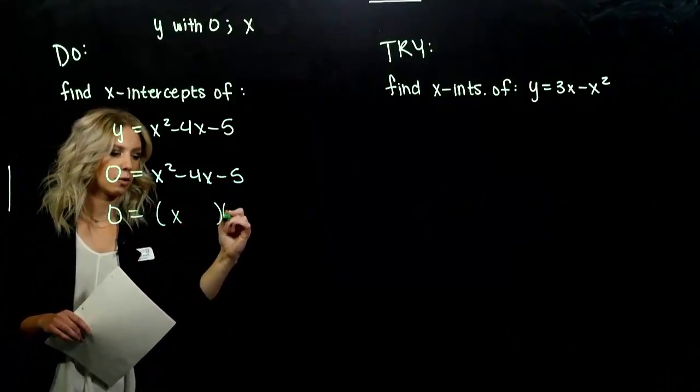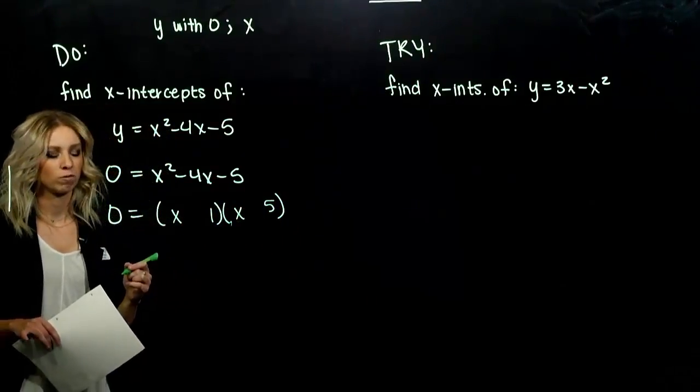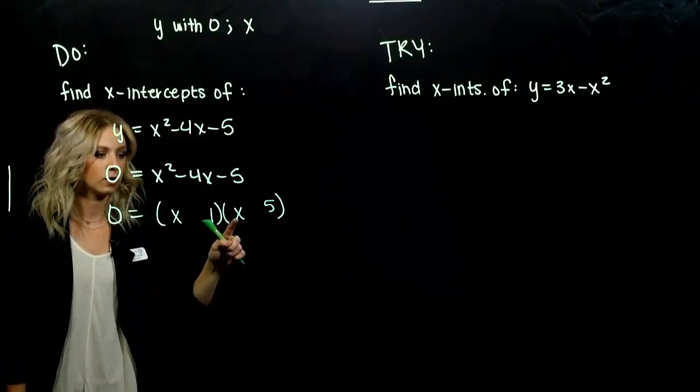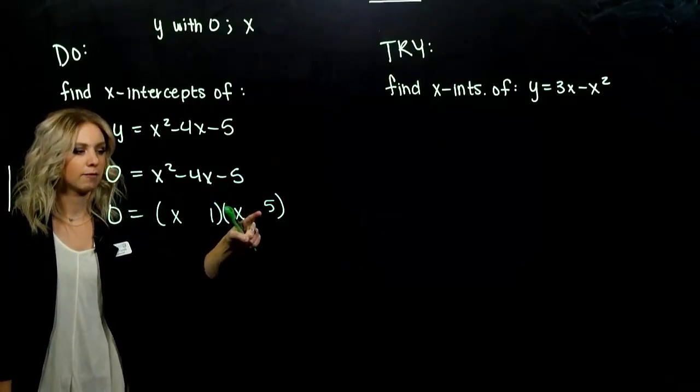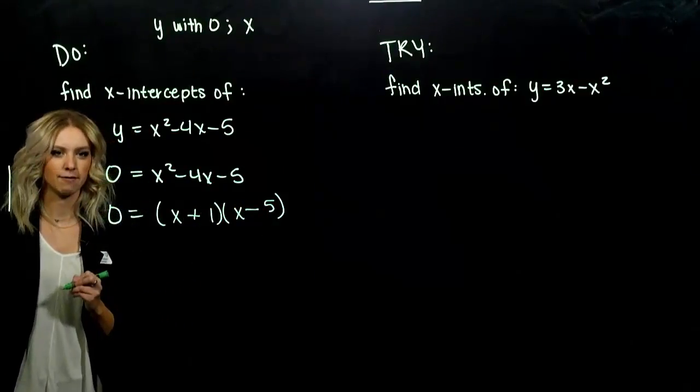Okay, we've got to factor. We've got a 1 out on the front, and 5 is prime. So we need to figure out what combo will give us negative 5 when we multiply and negative 4 when we add. Positive 1, negative 5.